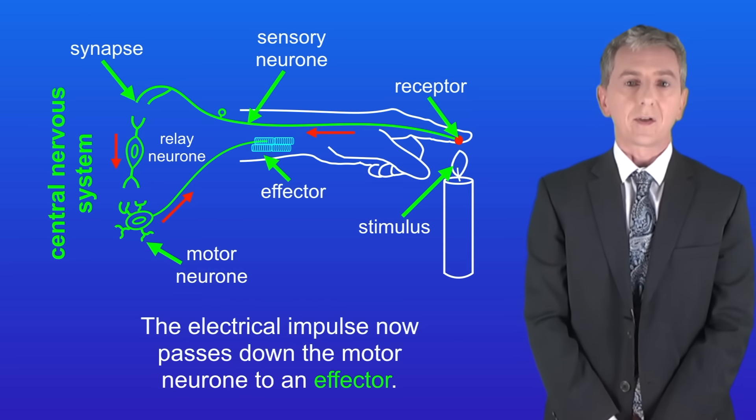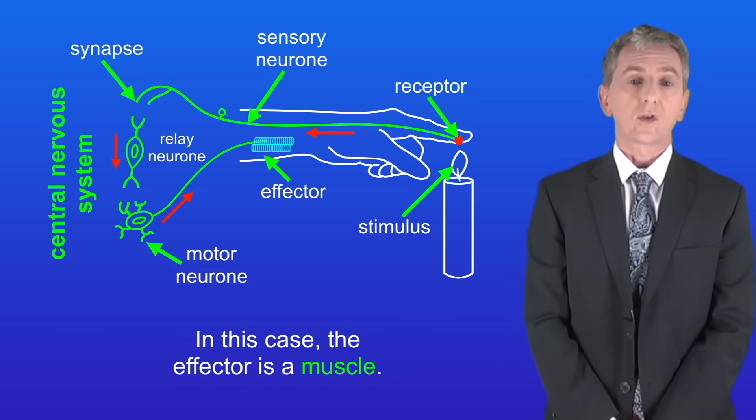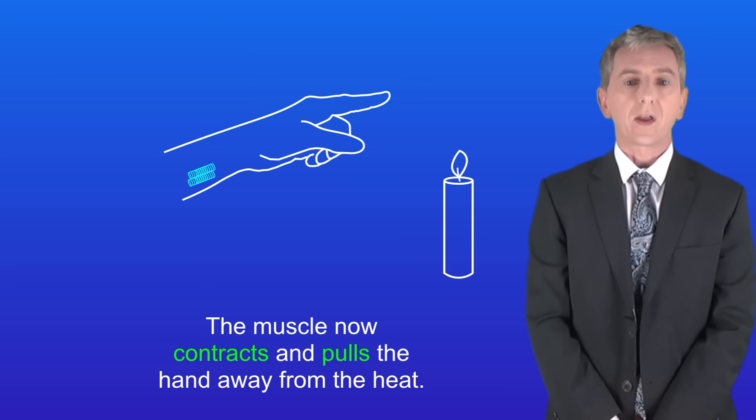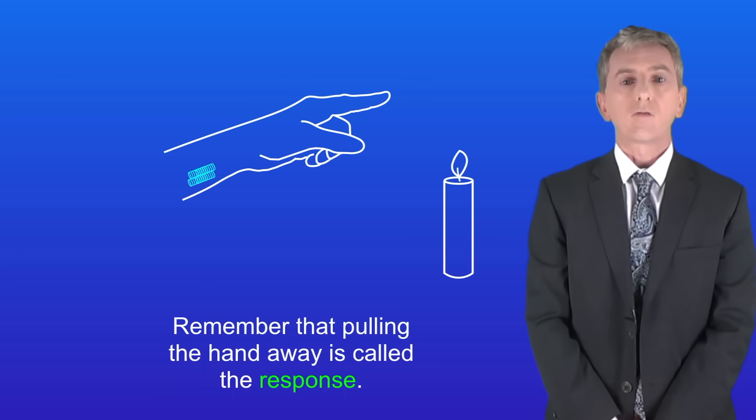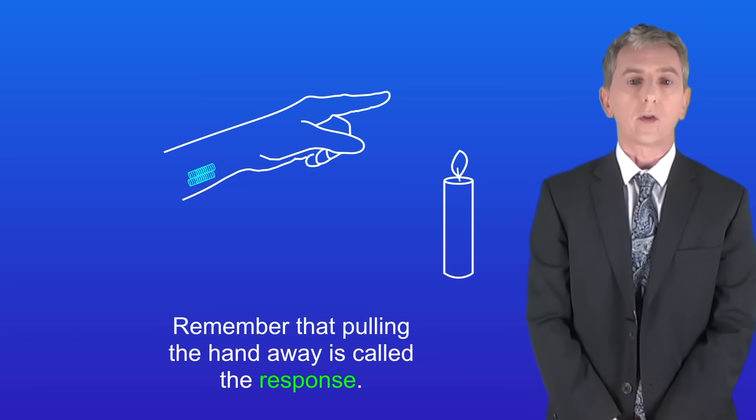The electrical impulse now passes down the motor neuron to an effector. In this case the effector is a muscle. The muscle now contracts and pulls the hand away from the heat. And remember that pulling the hand away is called the response.